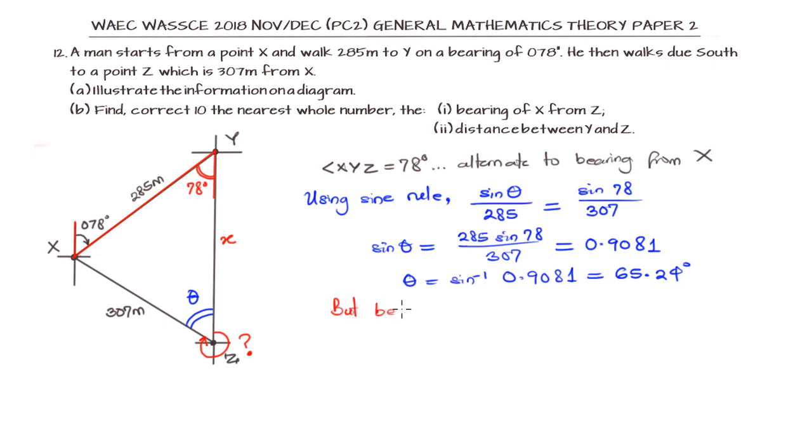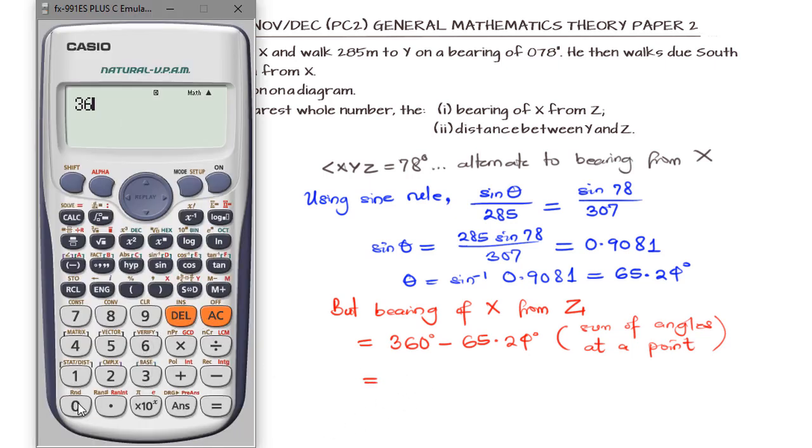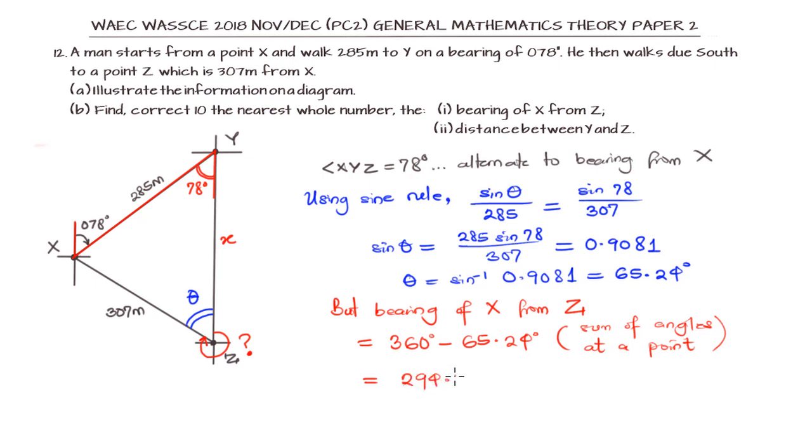But nobody asked us to find angle theta. We are only asked to find the bearing of X from Z. If you look at that point, we have angle at a point which is 360. So the bearing will be 360 minus 65.24. That is because the sum of angles at a point is 360 degrees. Our bearing will be 294.76.